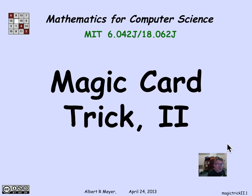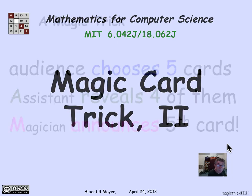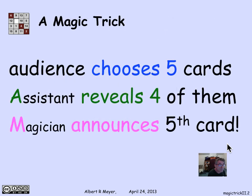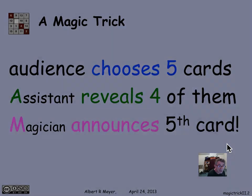Let's find out how the magician and his assistant can actually do the trick. As a reminder, the magic trick has the audience picking four cards at random from a 52-card deck. The assistant chooses four of them to reveal in order. The magician, based on the four cards that he sees, predicts what the fifth card is. How are they going to do this?